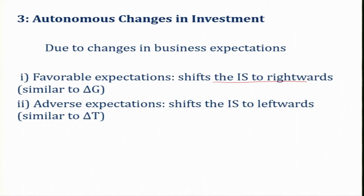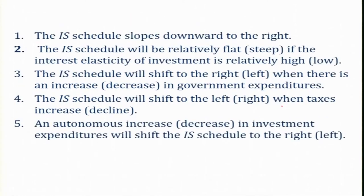This interpretation is almost equal to del G, because del G is also an autonomous variable — an increase in government expenditure is an autonomous variable. Similarly, changes in business expectations cause autonomous investment to also increase, shifting the IS curve rightwards. If there is an adverse expectation — for example, war or any other kind of uncertainty in the economy — then the autonomous component of investment will decline and the IS curve will be shifting leftwards.